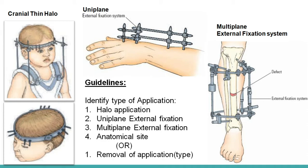To perform the halo procedure, after prepping and anesthetizing the patient, the physician secures the halo ring on the patient's head by tightening six or more pins diagonally. To make it more stabilized, the physician attaches a vest to the patient's body. After attaining a satisfactory halo device position, the physician confirms bone alignment on radiological images.